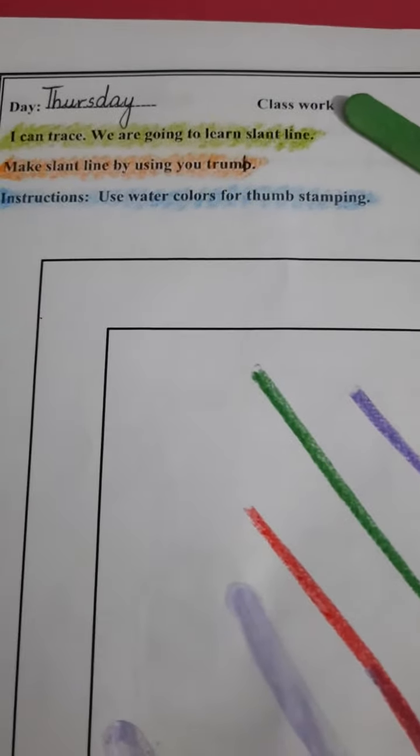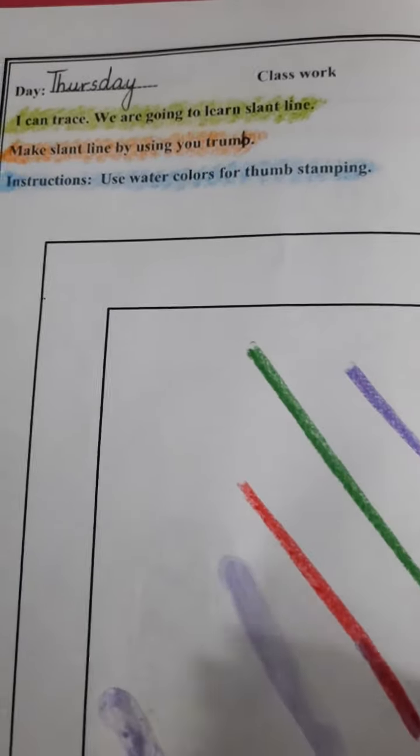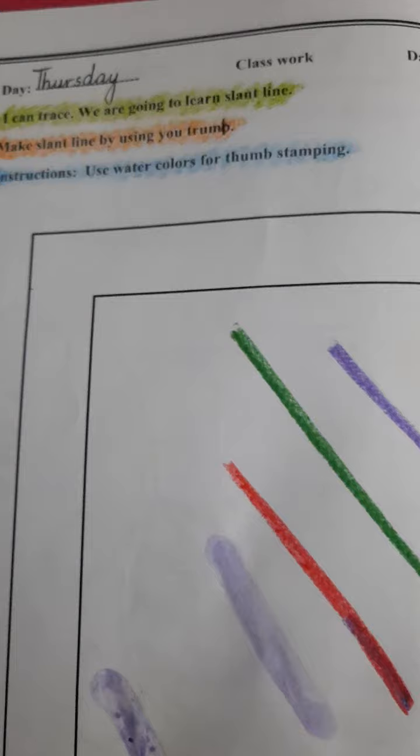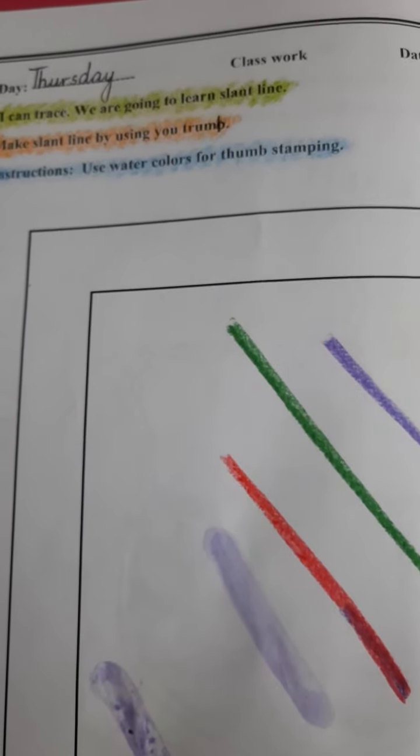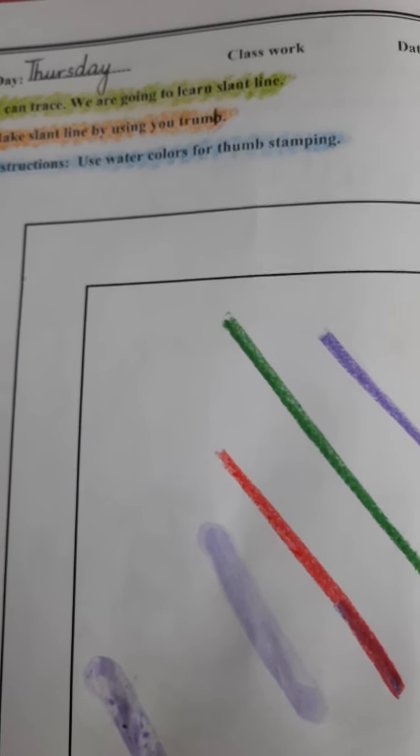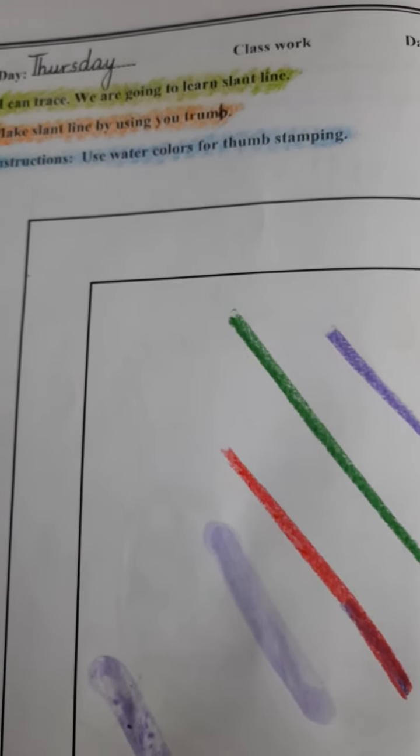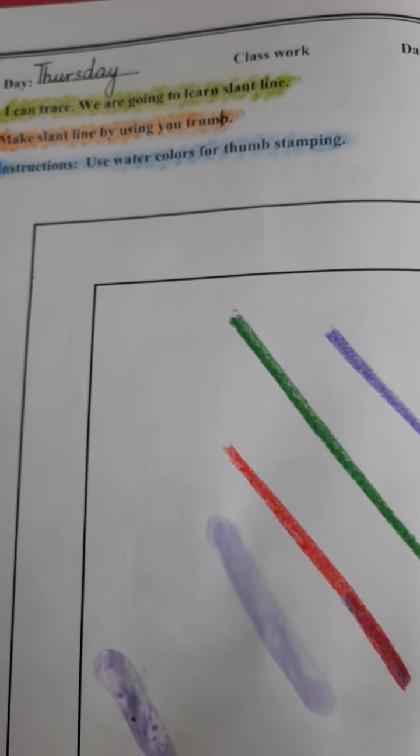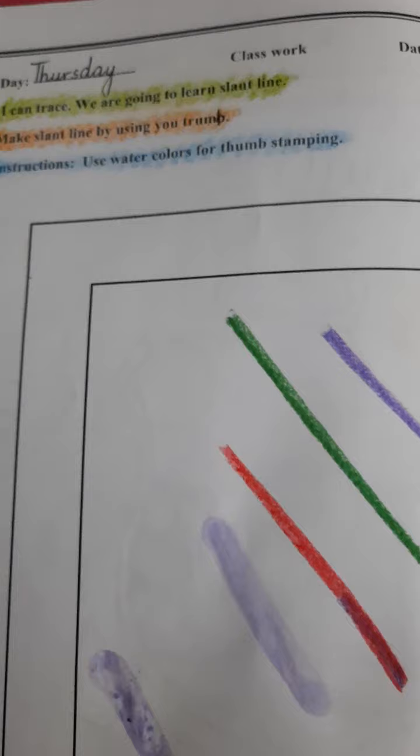This is your classwork. First of all, recite taos and tasmiya. Before you start your work, what do you have to recite? What is taos? Auzubillah min ashshaytuan ar rajim. What is tasmiya? Bismillah ar rahman ar rahim. Shuru Allah ke naam se jo bada meherbaan nihayat reham wala hai.